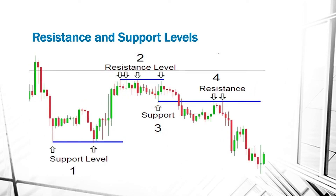Here we can see four examples of support and resistance levels. A price level may be tested several times. In example 1, the price level was tested three times before turning the other way. In example 2, the price level was tested four times before turning the other way. In example 3, it was tested once. And in example 4, it was tested two times.